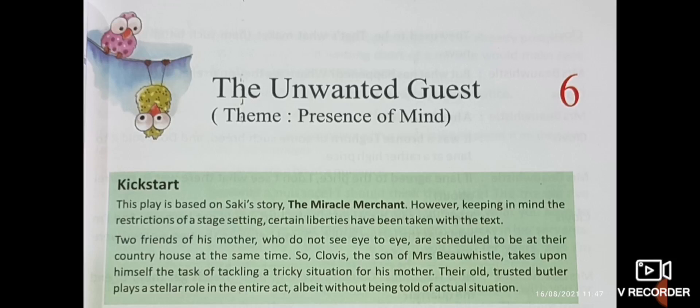Two friends of his mother who do not see eye to eye are scheduled to be at their country house at the same time. The protagonist was Clovis and his mother's name is Mrs. Hugh Whistle. The two friends of Mrs. Hugh Whistle do not want to see each other and are about to come to their house at the same time. Clovis, the son of Mrs. Hugh Whistle, takes upon himself the task of tackling a tricky situation for his mother. Tackle means to deal with the situation, and tricky situation means difficult to deal with.